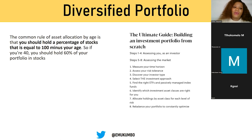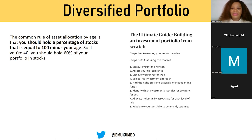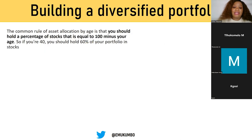Diversification: the common rule for asset allocation is 100 minus your age gives you the percentage of your portfolio that should be in stocks. The ultimate guide is to assess yourself as an investor, assess the market, know your time horizon and risk tolerance, and decide whether you want to invest in exchange-traded funds or individual stocks. Some people don't have time to research individual stocks, while others can do their own research — it basically depends on you.